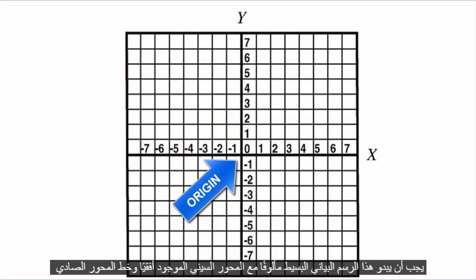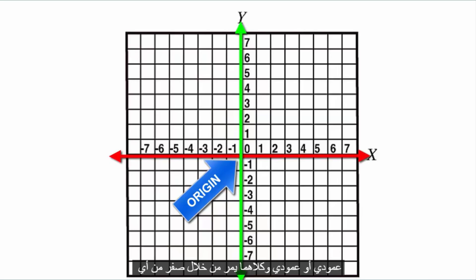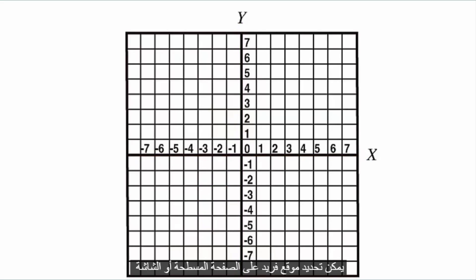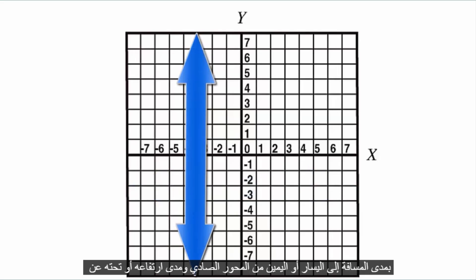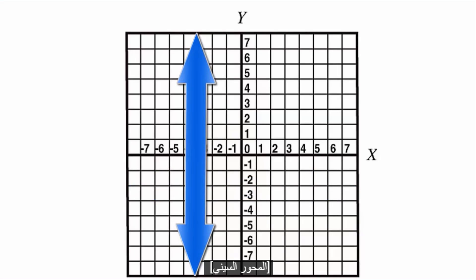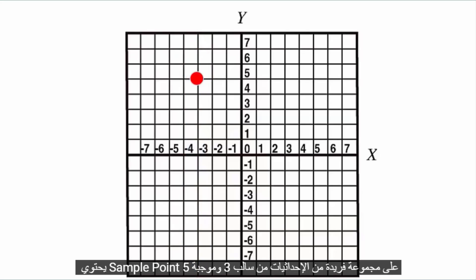This simple graph should look familiar, with the x-axis lying horizontally and the y-axis lying perpendicularly or vertically, and both passing through the zero of the other. Any location on the flat page or screen can be uniquely located by how far to the left or right it is of the y-axis, and how far above or below it is of the x-axis. The sample point has a unique set of coordinates of minus 3 and positive 5.